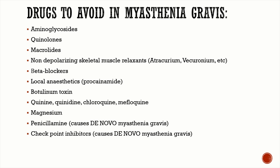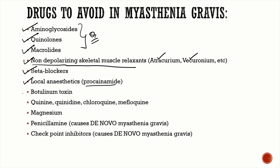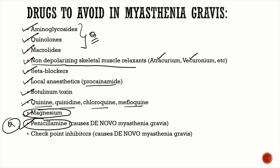Drugs to avoid in myasthenia gravis: antibiotics — particularly aminoglycosides, fluoroquinolones, and macrolides — are important to avoid since infection is the most common trigger of myasthenic crisis. Also avoid non-depolarizing muscle relaxants (atracurium, vecuronium), beta-blockers, local anesthetics like procainamide, botulinum toxin, quinine group drugs (quinine, quinidine, chloroquine, mefloquine), and magnesium. D-penicillamine and checkpoint inhibitors can cause de novo myasthenia gravis.